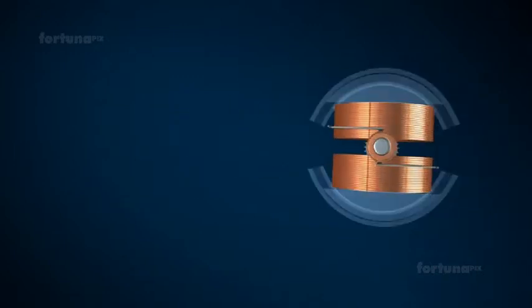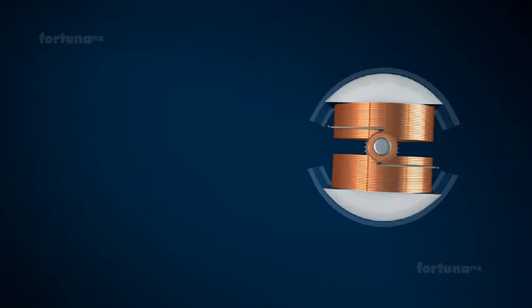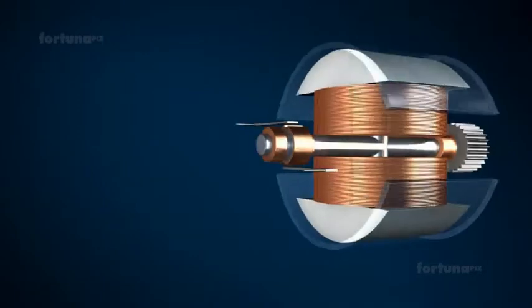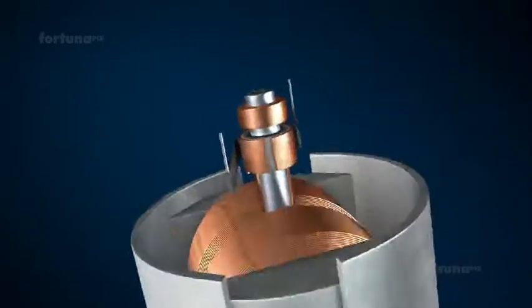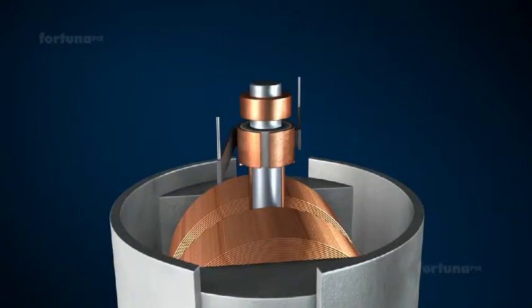The rectangular armature is placed directly between the two magnets and its ends are electrically fused to the commutators. The commutators are then arranged on the shaft in such a way that a small gap is left between the two ends.